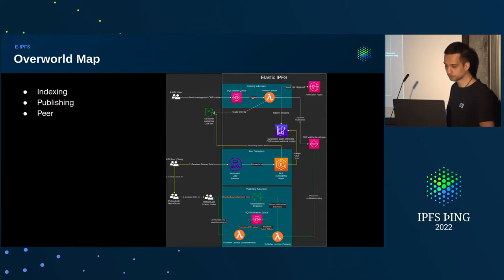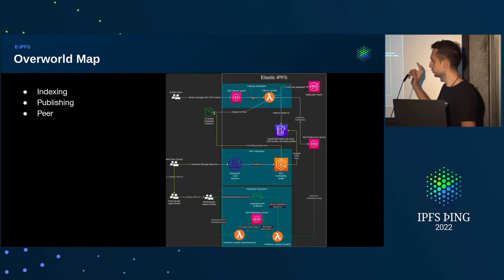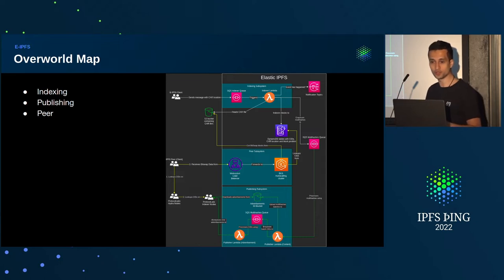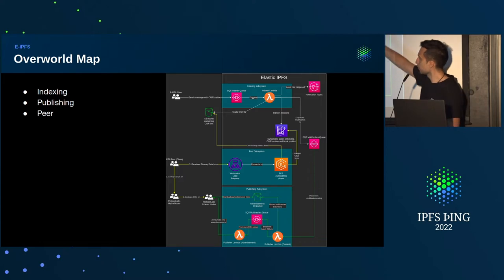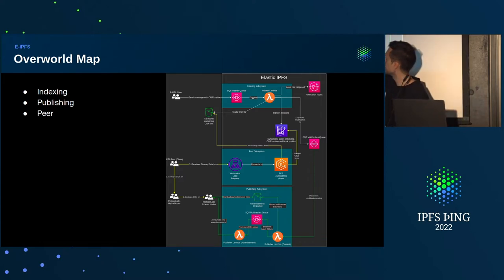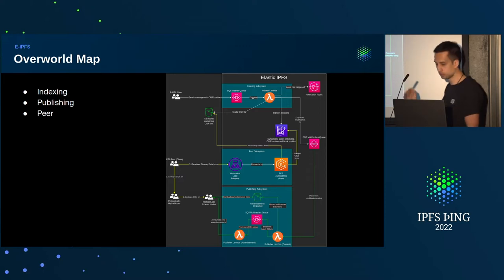One interesting thing is that yesterday I talked with some folks here during the conference who actually cloned the infrastructure repo and were able to create everything just by reading the docs and running the commands. I didn't even know they were doing that — I just found out. That was awesome feedback. And we have these logical subsystems: indexing, publishing, and peer, each focused on specific objectives, and we're going to zoom in on those.